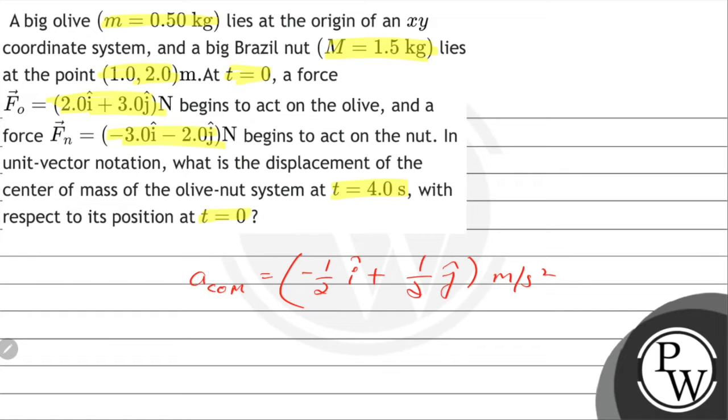Each component is constant, so we can write r of center of mass equals 1/2 times a of center of mass times t squared, which equals minus 4i cap plus 4j cap at t equals 4 seconds.